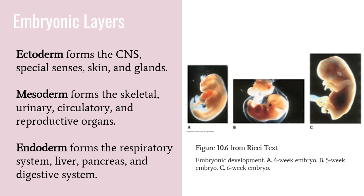The embryonic period of development is the development of basic organ systems. It begins with the fusion of the oocyte, also known as the developing egg, and sperm cell. This eventually differentiates into three germ layers. Some cells become the embryo while others become the membranes that surround and protect it. The ectoderm layer forms the central nervous system, special senses, skin, and glands.